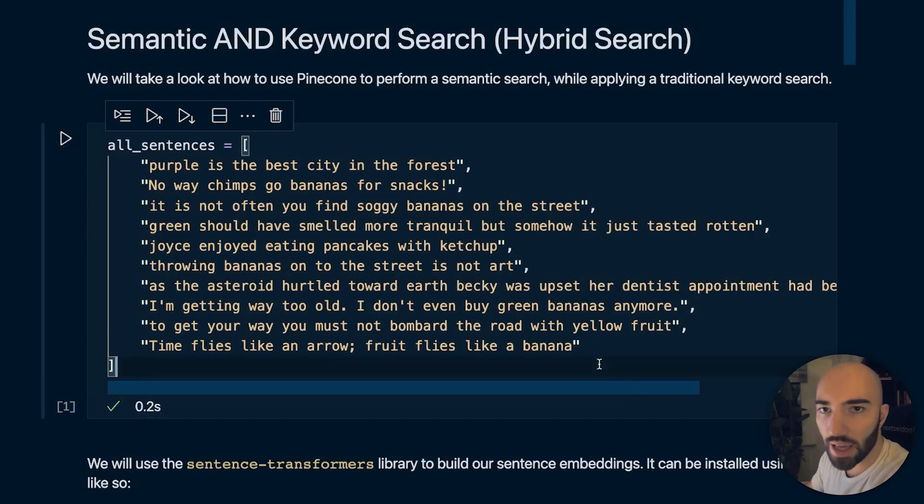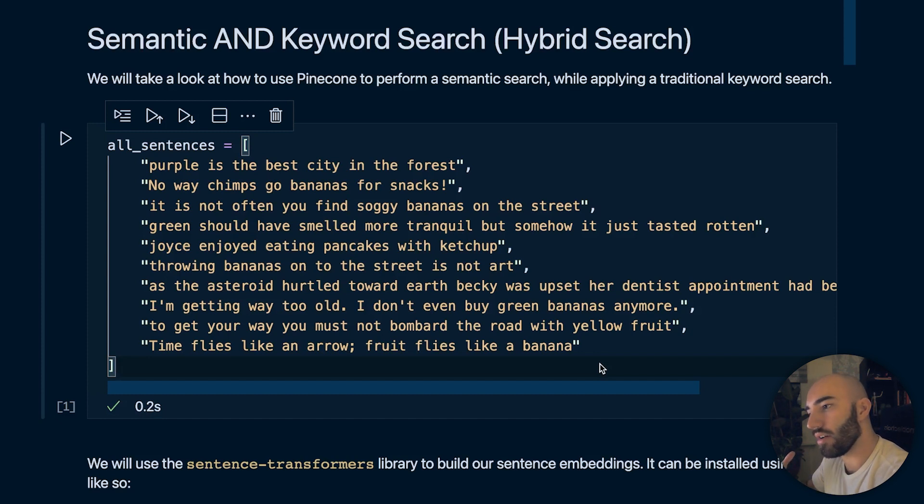Pinecone allows you to perform a hybrid search, combining both semantic search and keyword search. We start with our full index with all of our vectors, apply a keyword search to filter out irrelevant vectors from our search scope, then introduce our query vector to find the top k — in this case three — most similar vectors. This is the semantic search portion of our query. Now let's look at how to implement that in Pinecone using AND, OR, and AND NOT modifiers.